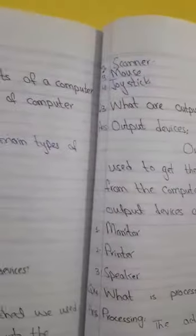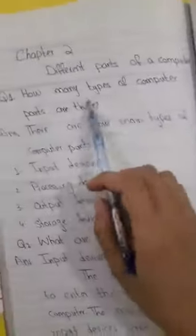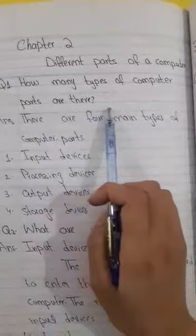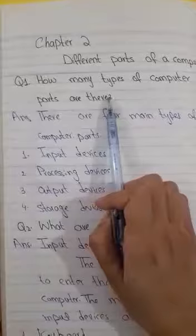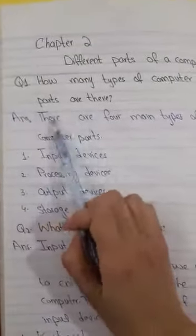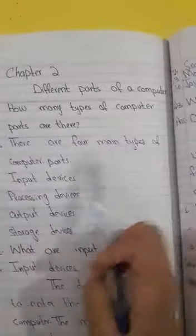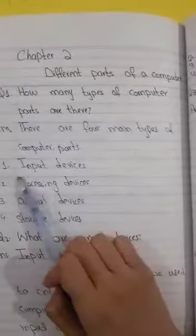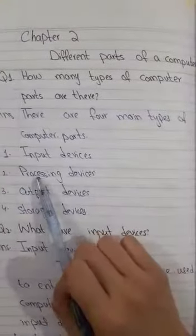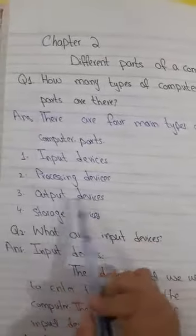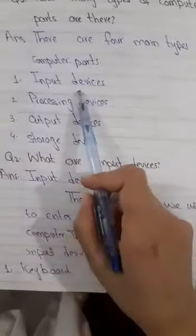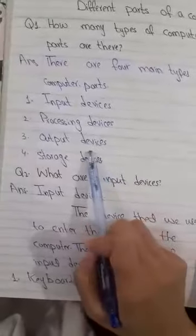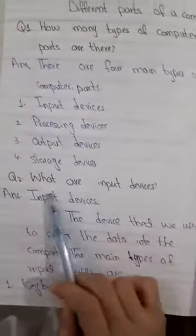Question number 1: How many types of computer parts are there? Answer: There are four main types of computer parts. First one, input device. Second, processing device. Third, output device. And last, storage device.